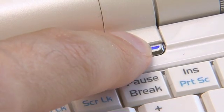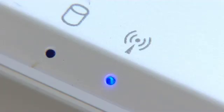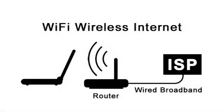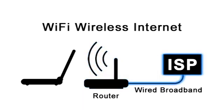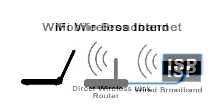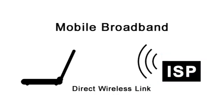Many people already use Wi-Fi to wirelessly access the internet on a laptop computer. However, this only works when you're in range of a wireless router with a wired broadband connection. In contrast, mobile broadband provides a direct wireless link between your computer and an internet service provider, usually using their 3G mobile phone network.